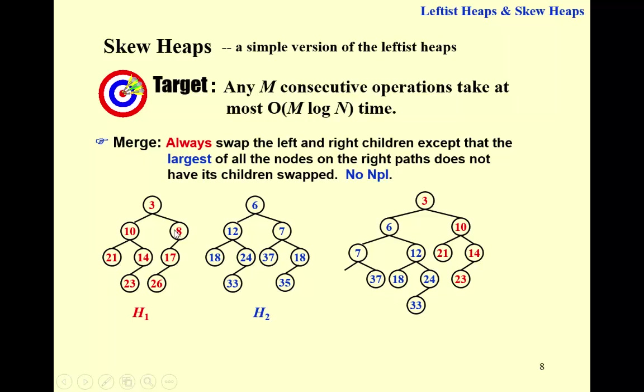And next, we're going to compare these two heaps. So we're going to keep eight and swap children. And finally, we get 18 as the last node or the largest of all the nodes on the right path. That's this 18.